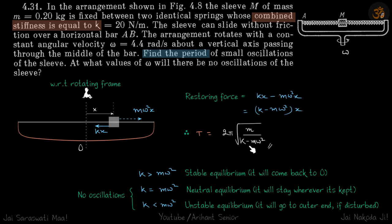Now obviously this makes sense if k is greater than mω². So if the spring is quite stiff, only then will the mass move inwards. Otherwise, there's a good chance that this mass will just go to the extreme end.